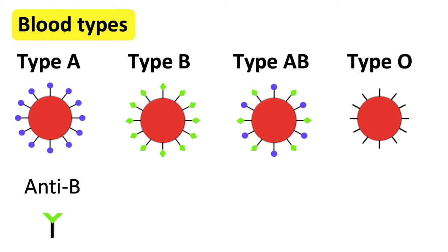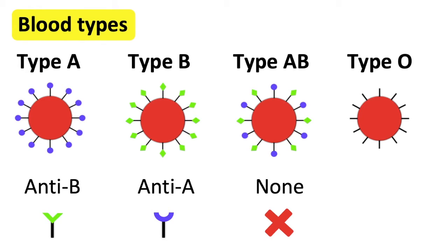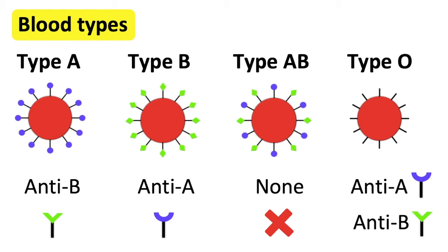Type B blood group has B antigens, so antibodies in the body only recognise these cells as being the body's own cells. Blood group B has anti-A antibodies, so antibodies will attack group A cells if they enter the body, because the antibodies recognise the type A antigen. Blood group AB has A and B antigens and no antibodies. Type O blood group has no antigens, and this group has anti-A and anti-B antibodies, so white blood cells will attack A and B cells if they enter the body.